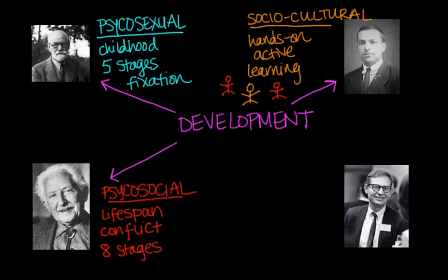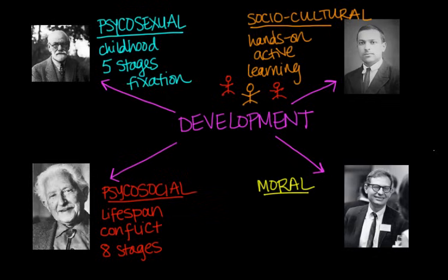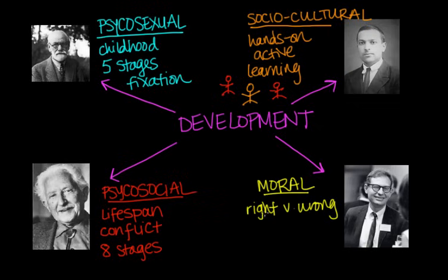Unfortunately, Vygotsky died at the age of 38, so many parts of his theory were incomplete. The last theorist is Lawrence Kohlberg, who developed the moral development theory — looking at how we develop our morals throughout life. He focused on moral reasoning, or why people think about the difference between right and wrong. He believed that moral reasoning depends on the level of cognitive development and proposed that people pass through three levels of moral development. Each of these three levels was further divided into two stages, giving six levels altogether.